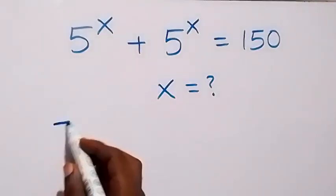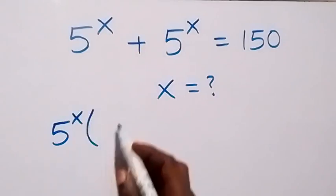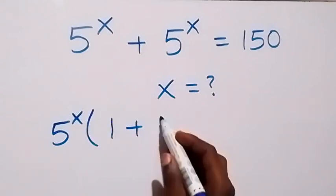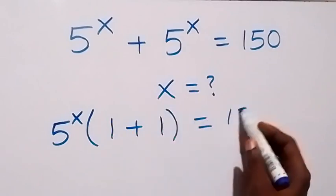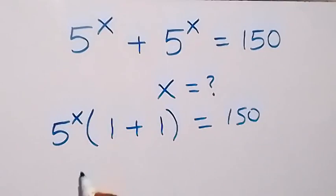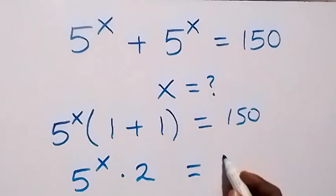We can factor 5 raised to power x out, and what will be left here will be 1 plus 1 equals to 1.50. Then this becomes 5 raised to power x, and 1 plus 1 here is 2, which equals to 1.50.